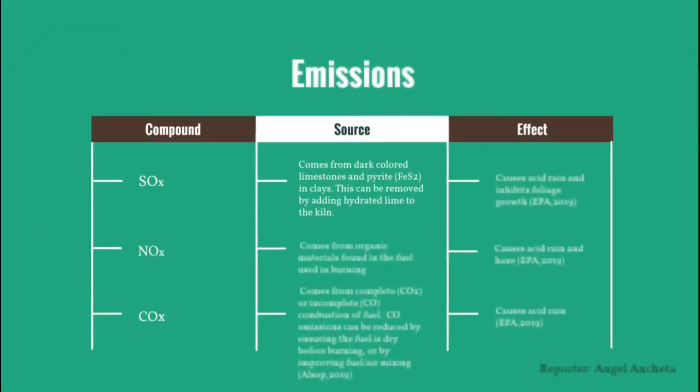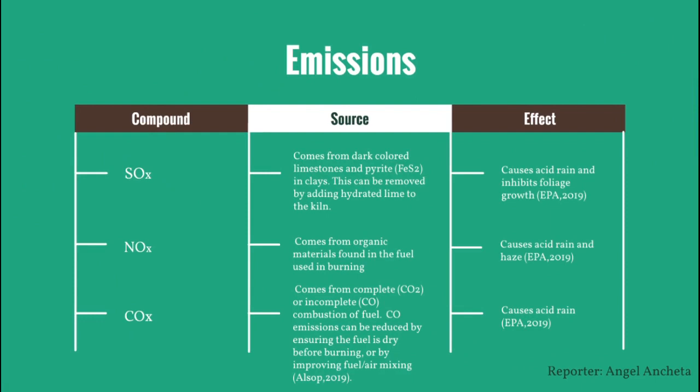Cement manufacturers also produce other emissions including SOx, NOx, and COx. SOx or sulfur oxides come from dark-colored limestone, pyrite, and clays. They can be removed by adding hydrated lime to the kiln, but if released can cause acid rain and inhibit plant growth. NOx or nitrous oxides come from organic materials in the fuel and from burning, causing acid rain and haze. COx — carbon dioxide and carbon monoxide — come from incomplete or complete combustion of fuel. Carbon monoxide emissions can be reduced by ensuring that fuel is dry before burning or by improving fuel and air mixing. When released into the atmosphere, these can cause acid rain.